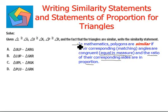So let's understand this concept with the help of some questions given to us. The first one says solve, given angle L is congruent to angle G, angle U is congruent to angle K, and angle P is congruent to angle R. And the fact that the triangles are similar, write the similarity statement.